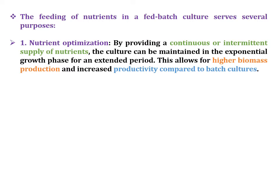The feeding of nutrients in fed-batch cultures serves several purposes. Firstly, nutrient optimization — the most important parameter for fed-batch culture as well as batch and continuous culture. By providing a continuous or intermittent supply of nutrients, the culture can be maintained in the exponential growth phase for an extended period, allowing for higher biomass production and increased productivity compared to batch culture.